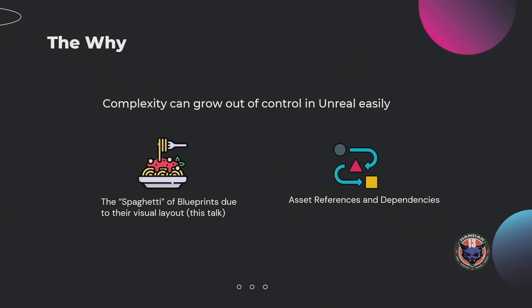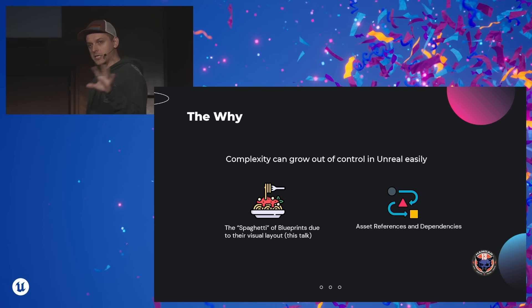Complexity in Unreal can grow out of control in two main ways — two main axes. You can have the so-called spaghetti, because blueprints themselves are a visual language, and due to the nature of the flow of that visual stuff, it can get very hard to understand or maintain. But also, the asset references. By creating references between assets, you create chains of dependencies, and the longer these chains, the more problems you will have. We're going to concentrate a bit more on the first part, but I'm going to touch a bit about the references and dependencies as well.